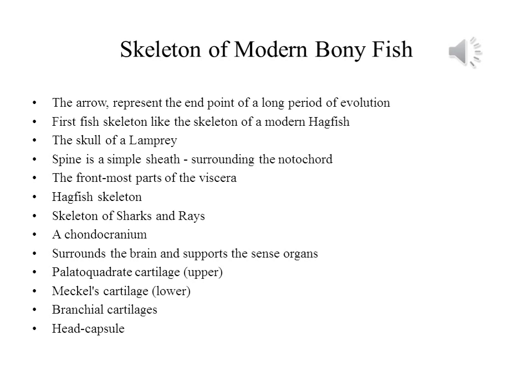The skeleton of the first fish was probably like the skeleton of a modern hagfish, which is little more than an amalgamation of pieces of cartilage. The skull of a lamprey is a single cartilage with a few lobes and spines, while the spine is a simple sheath of cartilage surrounding the notochord. There is also a simple cage of cartilage to support the front most part of the viscera. The skeleton of a hagfish is even simpler. Sharks and rays have a more complex skeleton system, which for the most part is still only cartilage and not bone.